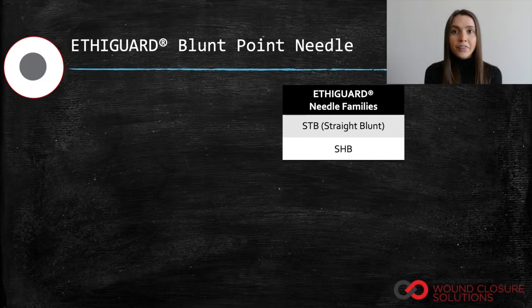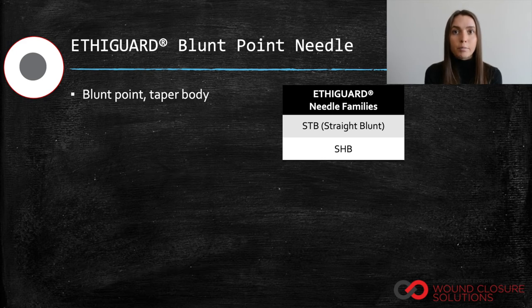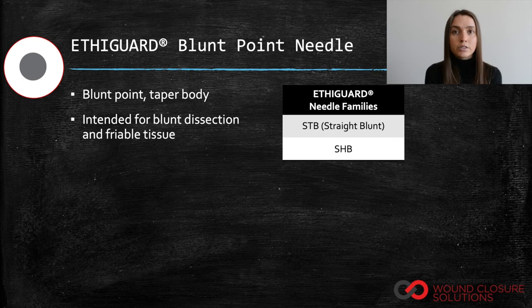Ethigard blend point needles have blunt points and taper bodies. Blend point needles are typically utilized for blunt dissection and for suturing friable tissue such as the liver.